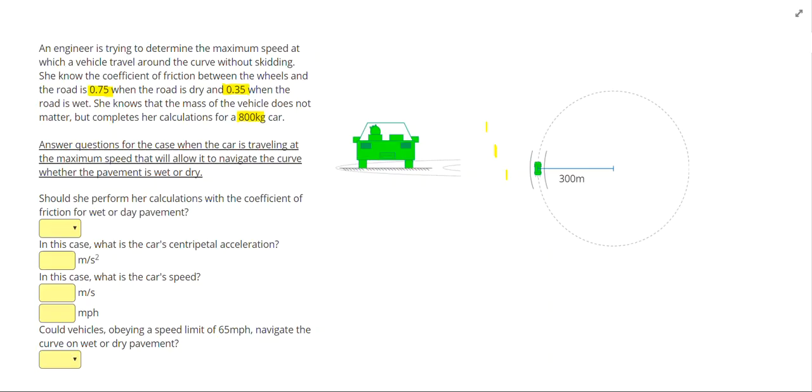So in this problem, it's like we're trying to set the speed limit for the road. We want the speed limit to be safe when the road is wet or dry. So we should figure out the speed limit under the most dangerous conditions, because then it will also work under the less dangerous conditions. So she should perform the calculations when the road is wet, because if it works when it's wet, it will work when it's dry as well.